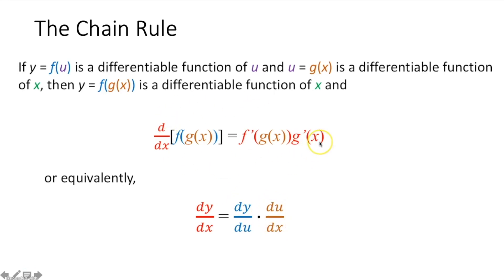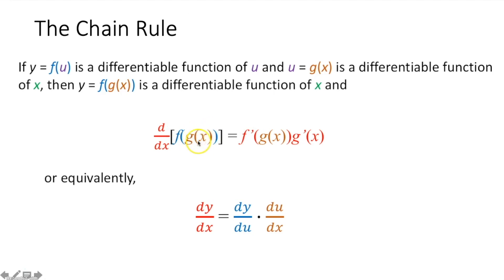This looks super complicated, but it's actually pretty easy. What this is saying is that if you have a composite function — a function within a function — and you are taking the derivative of that composite function, you're going to take the derivative of the outer function f, so f prime, and leave the inner function alone. Then you will multiply that by the derivative of that inner function. That is why it's called the chain rule.